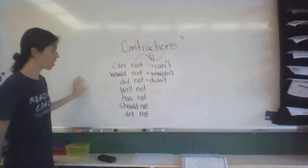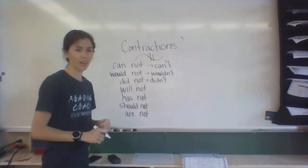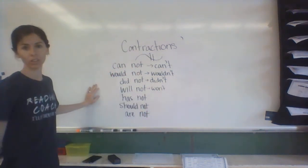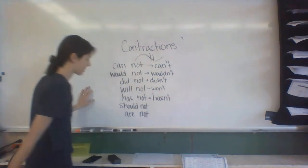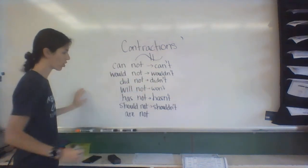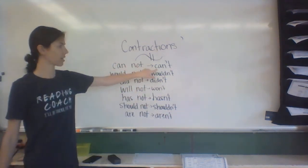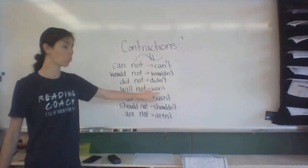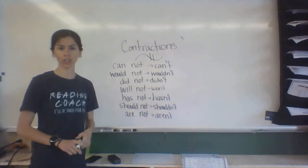All of these: 'will not'—sorry, 'will not' is tricky. It's gonna turn to 'won't.' 'She won't go to the store.' 'Has not'—'hasn't.' 'Should not'—'shouldn't.' 'Are not'—'they aren't.' So 'cannot'—can't, 'would not'—wouldn't, 'did not'—didn't, 'will not'—won't, that one's a little tricky. 'Has not'—hasn't, 'should not'—shouldn't, 'are not'—aren't.